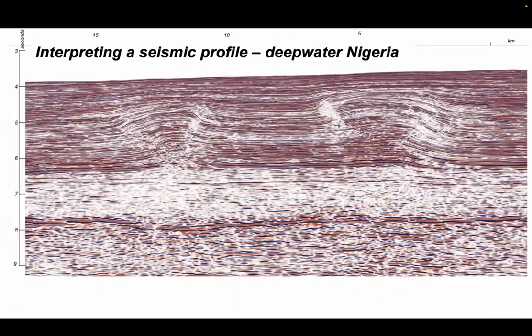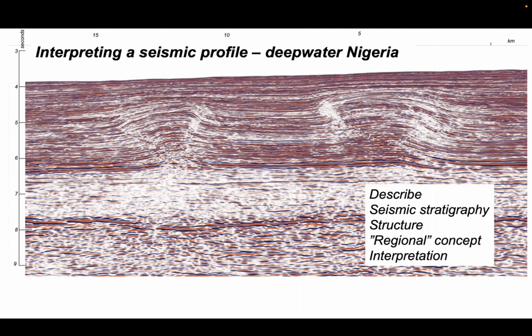This seismic profile comes from offshore Nigeria from the floor of the Eastern Atlantic, and we're going to have a go at interpreting it very quickly. We'll describe the seismic very simply and then use a combination of stratigraphy and structure to build an interpretation. Central to this is the application of the regional concept. I'll explain what that is when we get there.